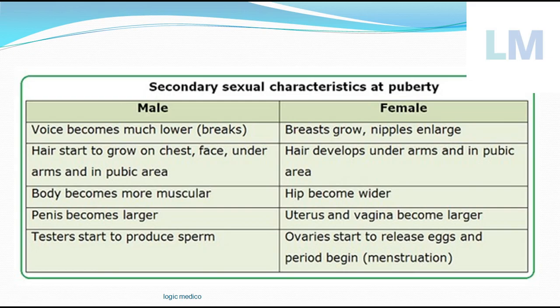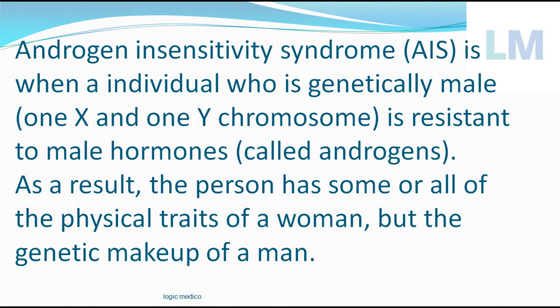Coming back to Androgen Insensitivity Syndrome: it is a syndrome in which the individual is genetically male — meaning each cell contains 46 chromosomes with the last pair being X and Y — but they are resistant to male hormones, the androgens. They have the hormone and the karyotype, but those hormones are not acting on the cells. So instead of having male physical characteristics, the secondary sexual characteristics will be that of a female, even though the genetic makeup is that of a man. These individuals can appear like the most beautiful women in the world, but their genetic makeup is male.